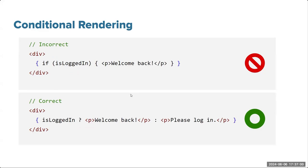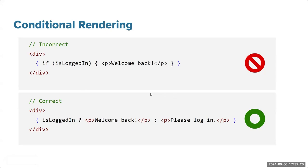For conditional rendering, you cannot use a regular JavaScript if statement inside JSX. You have to use the ternary operator: if this is true, render this; otherwise, render this. Make sure you put it inside the curly braces — if you don't, it will just be plain text.